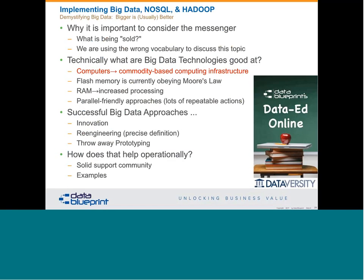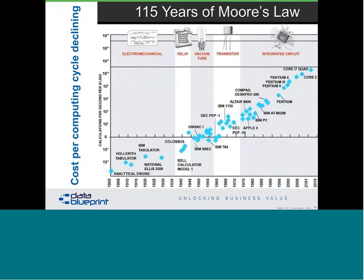Let's look at what those advances in technology are. The first one is the fact that computing has become cheaper. Computing technology has followed something called Moore's Law. Over the years, his observation was that every 18 months or so, the amount of computing power available doubles and the cost halves.